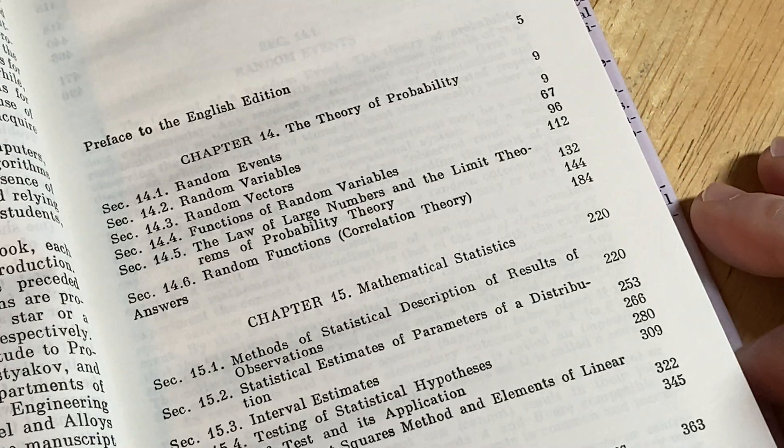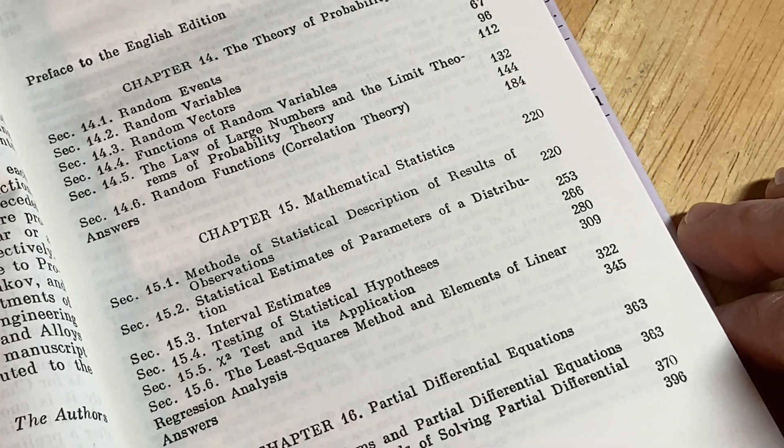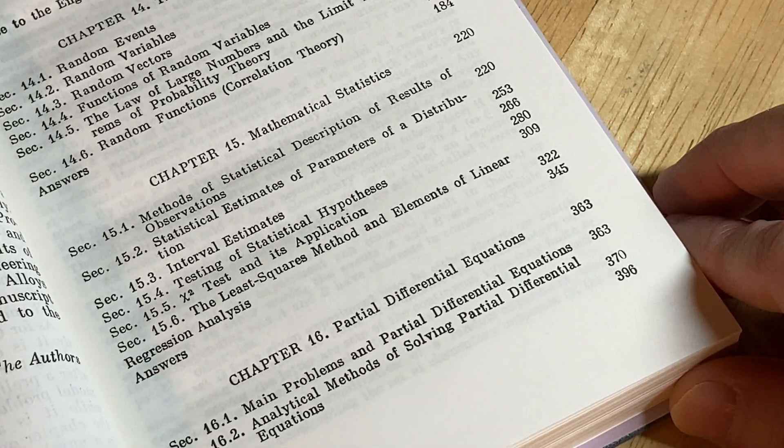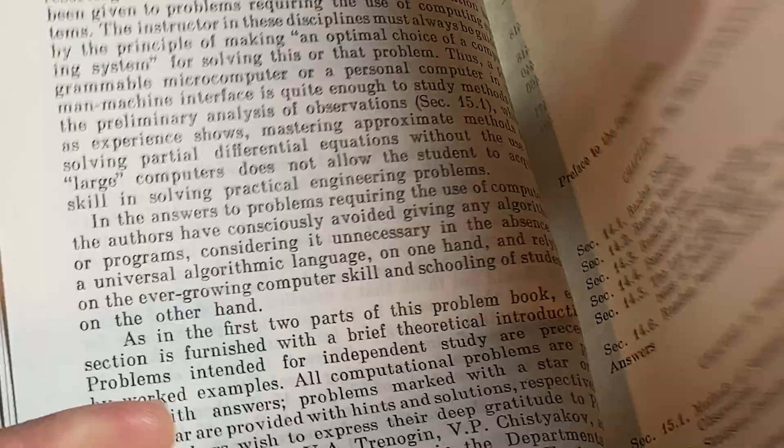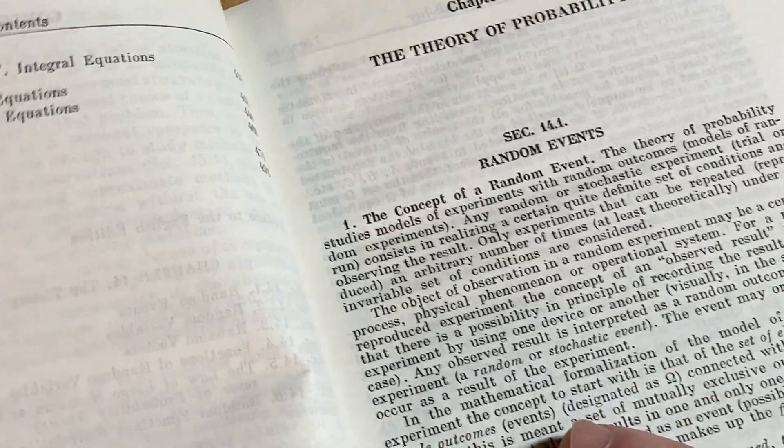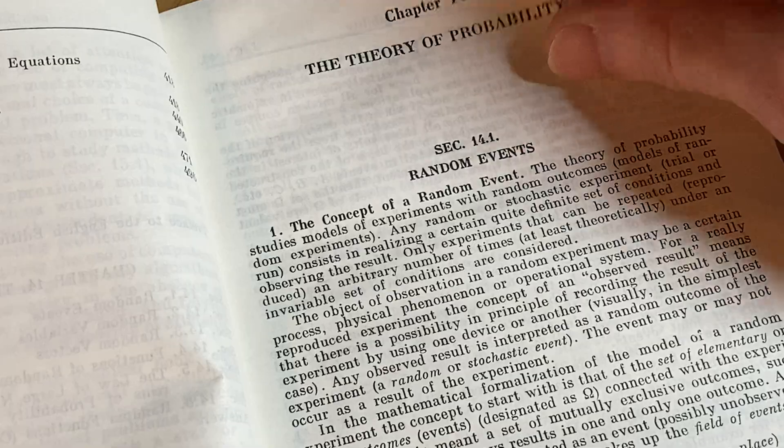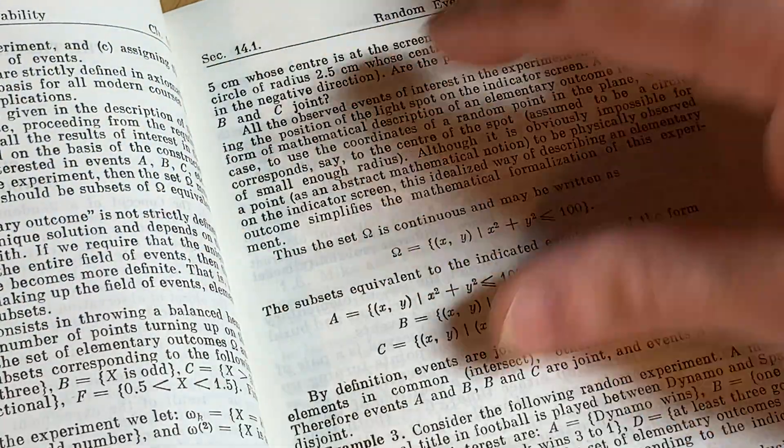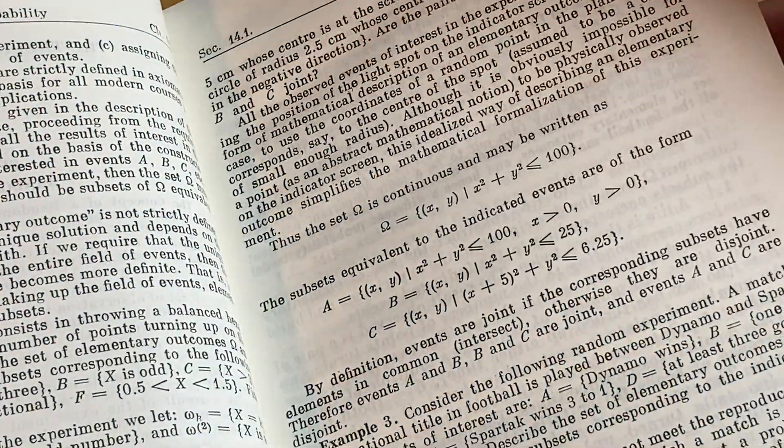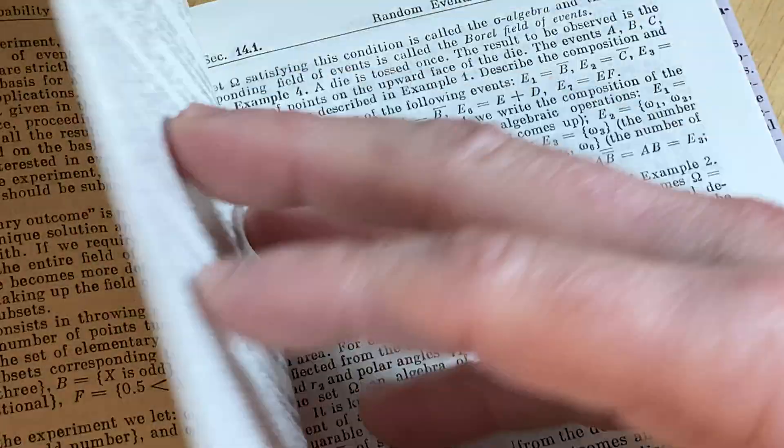And here's a look at some of the contents. You can see what it contains. Let's turn the page here. And here is the book. So the Theory of Probability is where it starts. Pages are very thin. This is a very, very old book. Very rare.